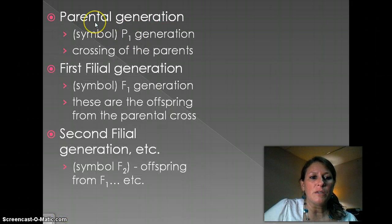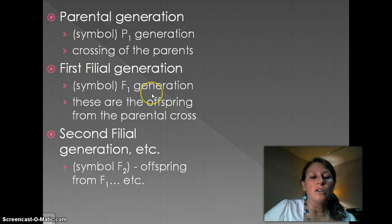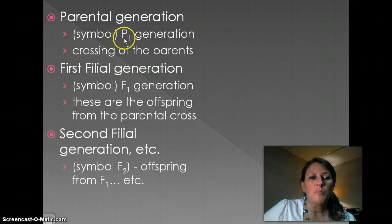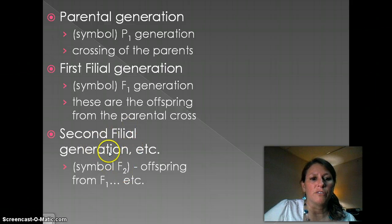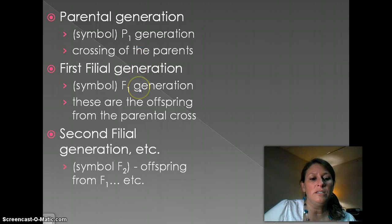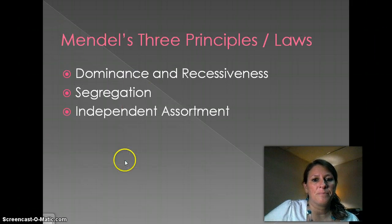We also have P1, F1, and F2 — symbols you need to be familiar with, and there will be a fill-in-the-blank question on what they stand for. P stands for parent, and one means first — so P1 is the first parental generation. F stands for filial, and F1 is the first filial generation, F2 the second. To put these together: P1 would be the grandparents, F1 are the kids, and F2 are the grandkids.